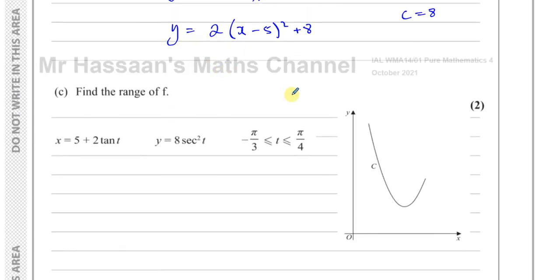Now part C says find the range of the function f. So the function f has this equation now y equals 2 times x minus 5 squared plus 8. And we can see it's a quadratic like this. And a quadratic has a maximum or a minimum. This has a minimum at this point here. This is the turning point, the minimum below which it never goes. And the minimum of a quadratic is found by its vertex. So if you have y equals 2 times x minus 5 squared plus 8, the vertex of this is going to be, well, the lowest value it can ever reach is 8.